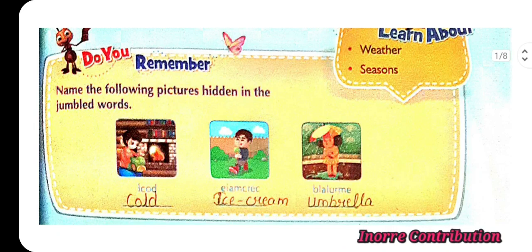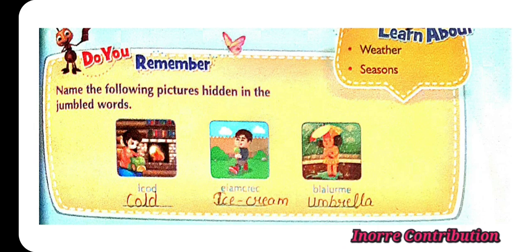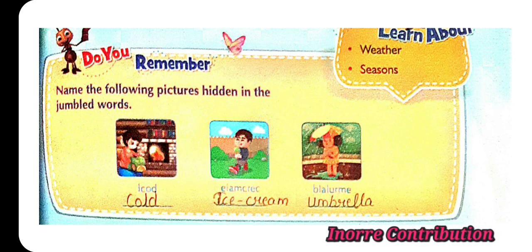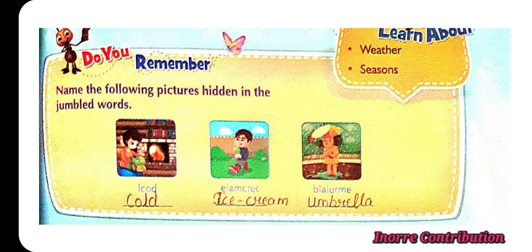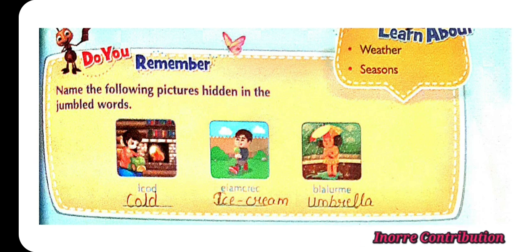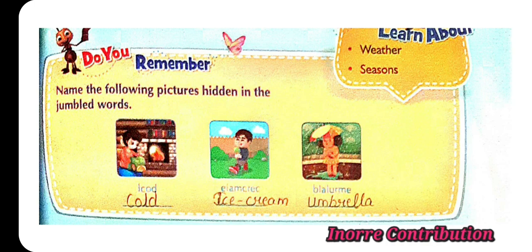Do you remember? Name the following pictures hidden in the jumble words. First one: cold. Second picture: ice cream. Third picture: umbrella.